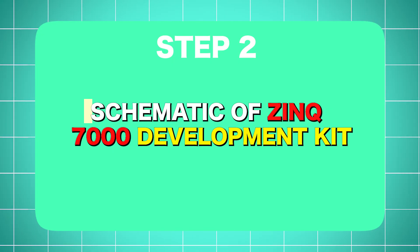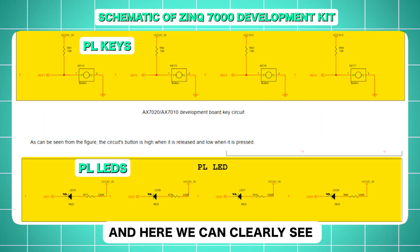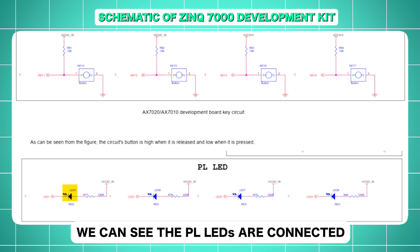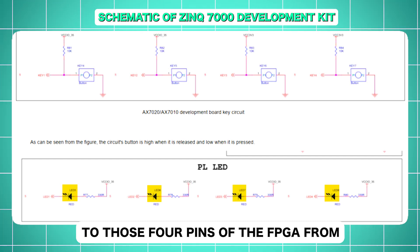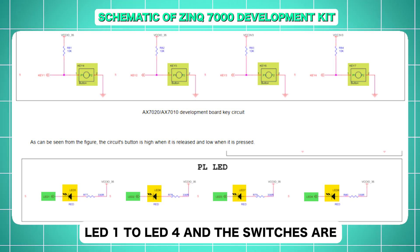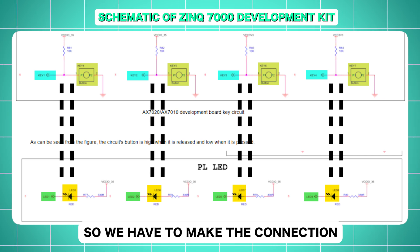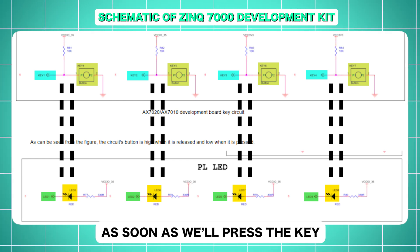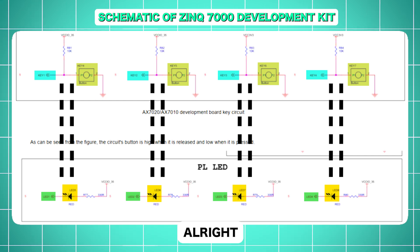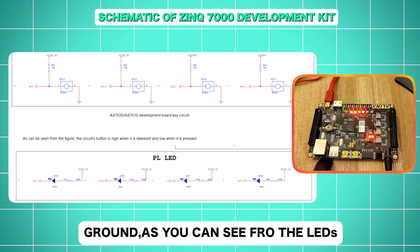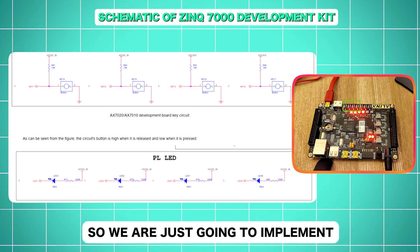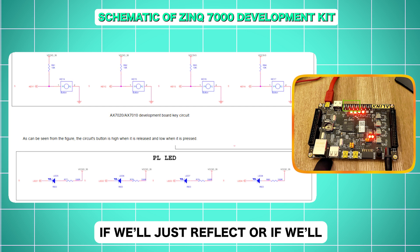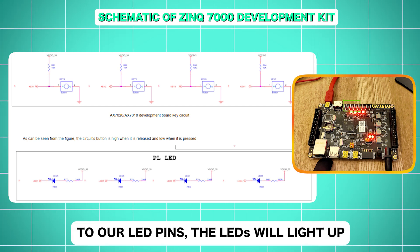Now I'm going to show you the schematic of the Zynq 7000 development kit, where we can clearly see how PL keys and PL LEDs are connected. The PL LEDs are connected to four FPGA pins from LED 1 to LED 4, and the switches are connected from Key 1 to Key 4. The default state of the switches is high — they are pulled up — and as soon as we press a key, it connects to ground. When it connects to ground, the LEDs will light up. So we are going to implement this same behavior in our Verilog code.